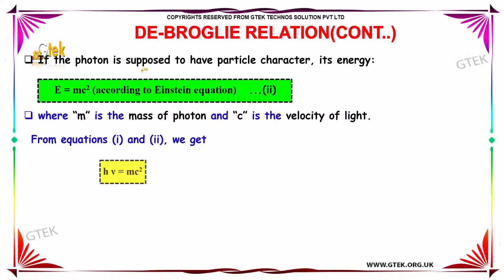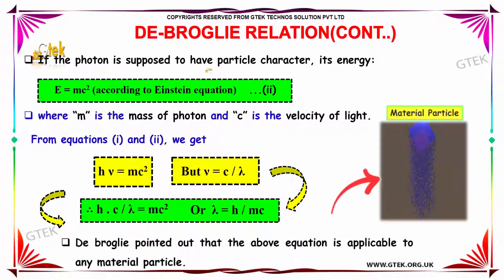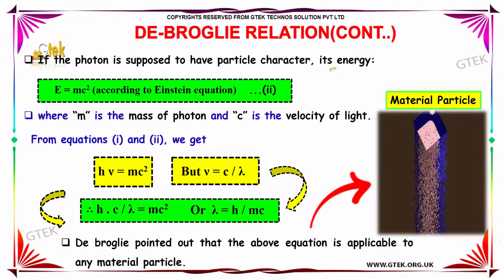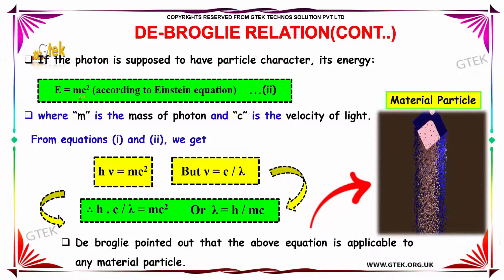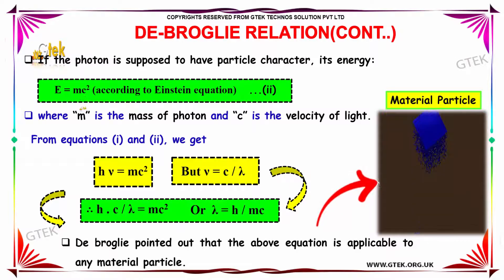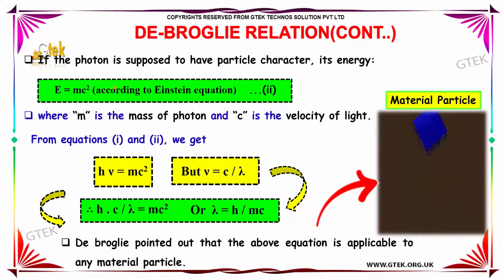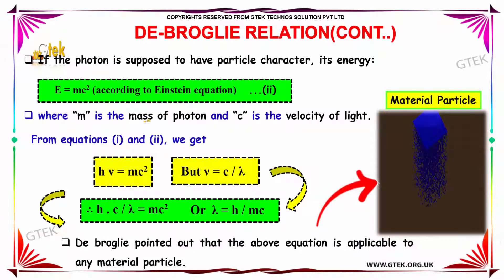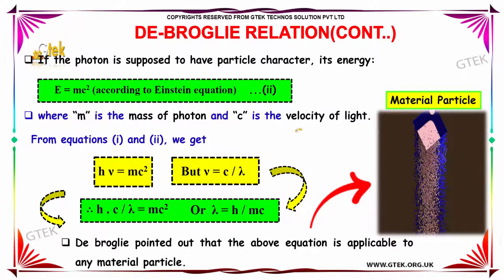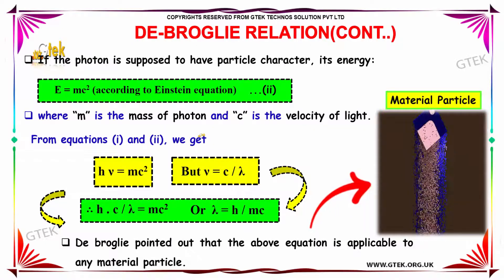If the photon is supposed to have particle nature, its energy is given by E = mc², which is Einstein's equation, where m is the mass of the photon and c is the velocity of light. As you know, we now have two equations.